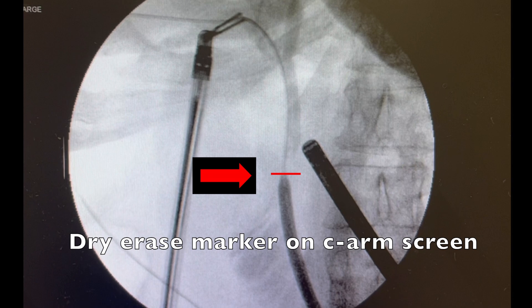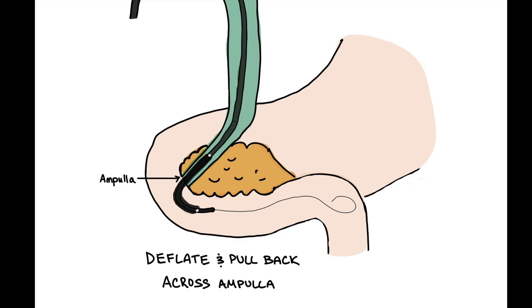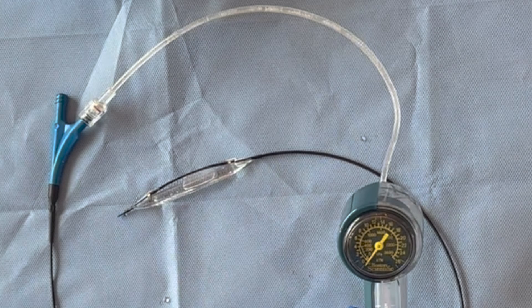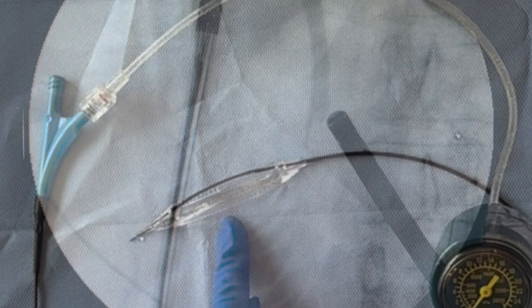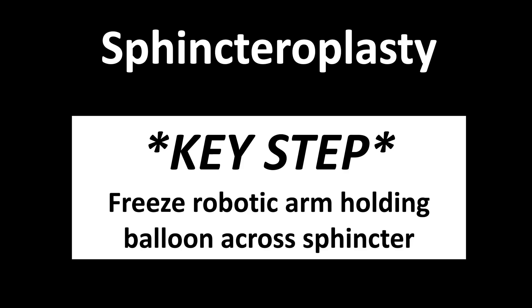The third step is to deflate the balloon and pull it back across the ampulla in preparation for the sphincteroplasty. To deflate the balloon, simply push in and hold the yellow button while you pull back on the plunger until it locks. The balloon will then deflate until it is empty and this can take up to 15 seconds. Here is live fluoroscopy showing the markers being pulled back until they are equally across the marked ampulla on the screen. The key step now is to freeze the robotic arm holding the balloon across the sphincter so the balloon does not slip out when you reinflate.